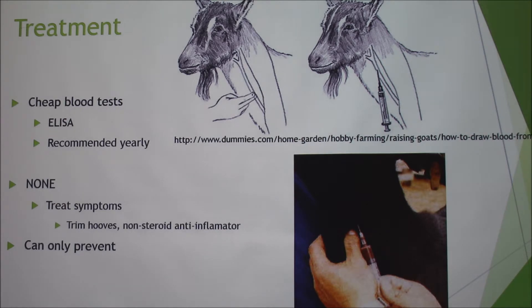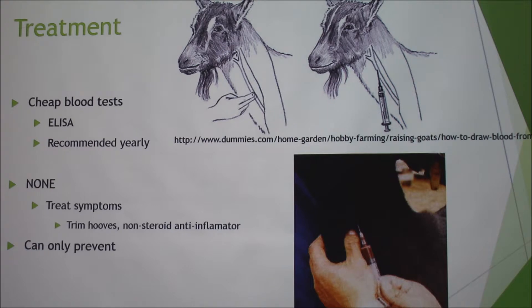The only way you can determine for sure if your animals have this is through a blood test. These have become a lot more accurate in the past few years and a lot cheaper. It's called the ELISA — enzyme-linked immunosorbent assay — just like those SNAP kits, basically. They recommend that you test yearly because even though an animal might show up negative, it could be that the virus is just staying dormant.